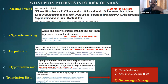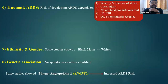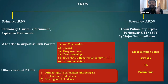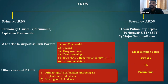Evidence-based risk factors include alcohol abuse, cigarette smoking, air pollution, hypoproteinemia, and transfusion risk. Traumatic ARDS was studied in the PROMPT study — a prospective observational multicentric study. Genetic associations were also studied. ARDS is classified into primary ARDS — pulmonary causes like pneumonia or aspiration pneumonitis — and secondary ARDS from extrapulmonary causes including non-pulmonary sepsis, peritoneal infection, urinary tract infection, major trauma, and burns. Despite all causes, the most common cause of ARDS is sepsis, followed by pneumonia.